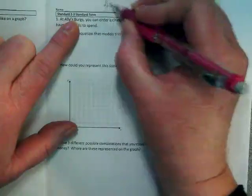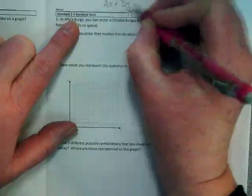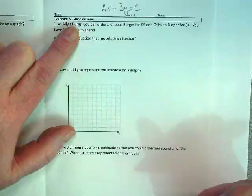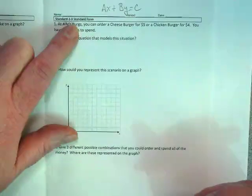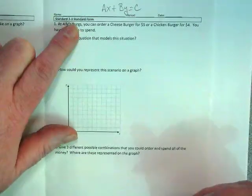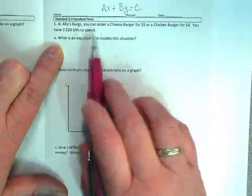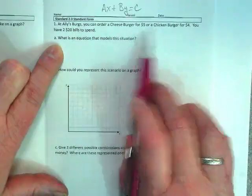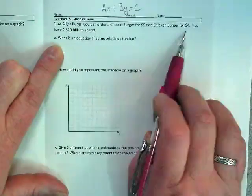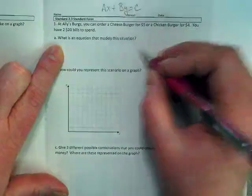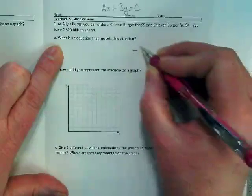Okay, I'm keeping that in mind as I start reading through this, because this section is going to be assessing whether I can use that equation. It says at Ali's Burgers, you can order a cheeseburger for five dollars or a chicken burger for four dollars. You have two twenty dollar bills to spend. How much total do I have then? That's my C.